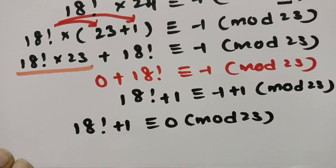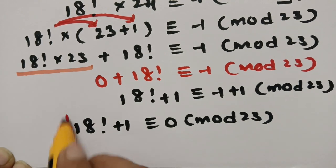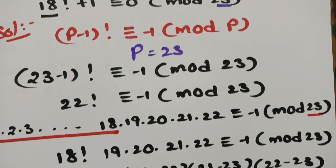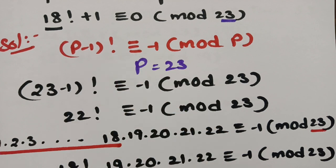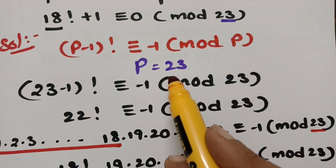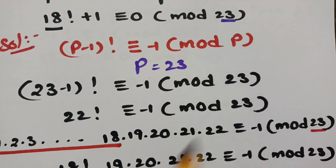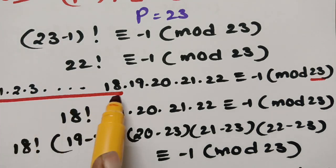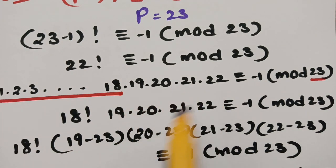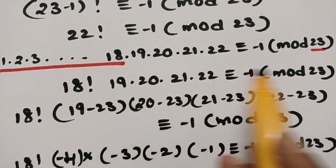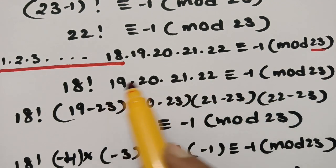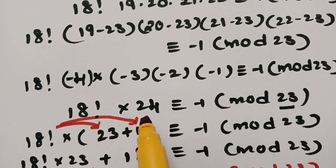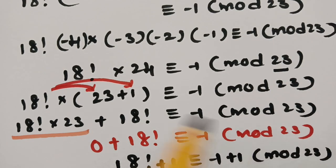This is the solution. We take prime P = 23, follow all these steps, and according to Wilson's theorem (P−1)! ≡ −1 (mod P). We select P = 23 from the question, write 22! with 18! separated out, the remaining numbers 19, 20, 21, 22 are replaced by −4, −3, −2, −1 giving 24 = 23 + 1.